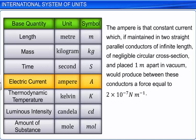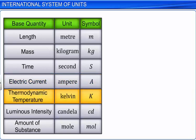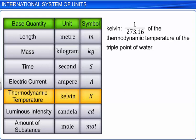Thermodynamic temperature is measured in Kelvin, denoted by the capital letter K. A Kelvin is a fraction 1 over 273.16 of the thermodynamic temperature of the triple point of water.